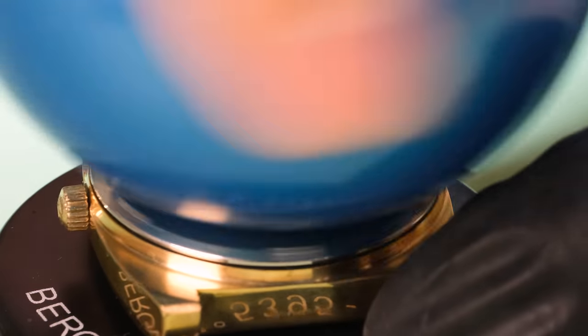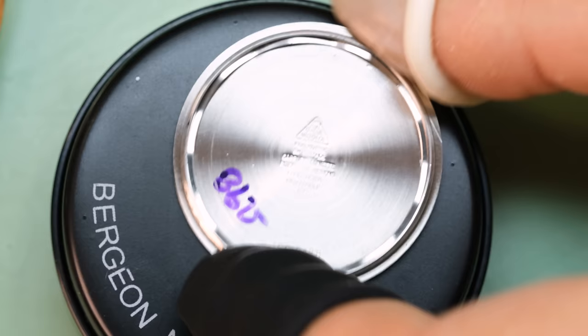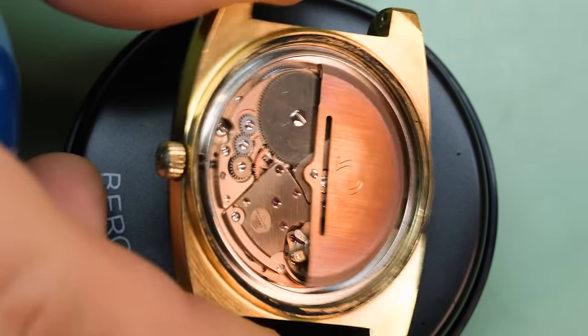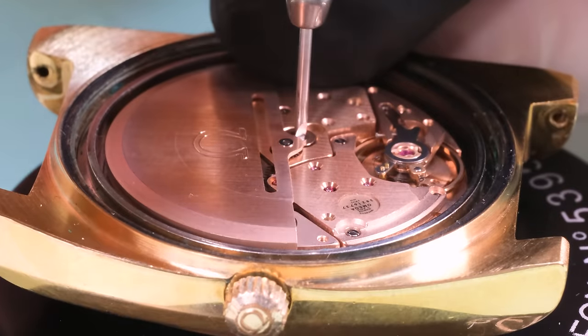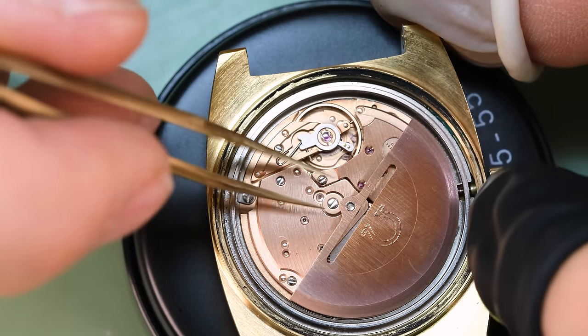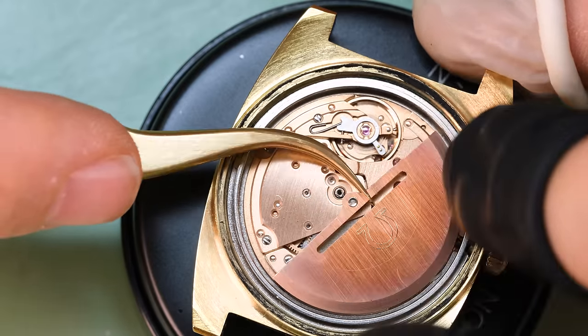Loose case back is never a good thing. It is, however, good to see that the last person who serviced the watch did not scratch their code into the case back, but rather used the marker. Quite discolored that rotor, but we'll clean that off.